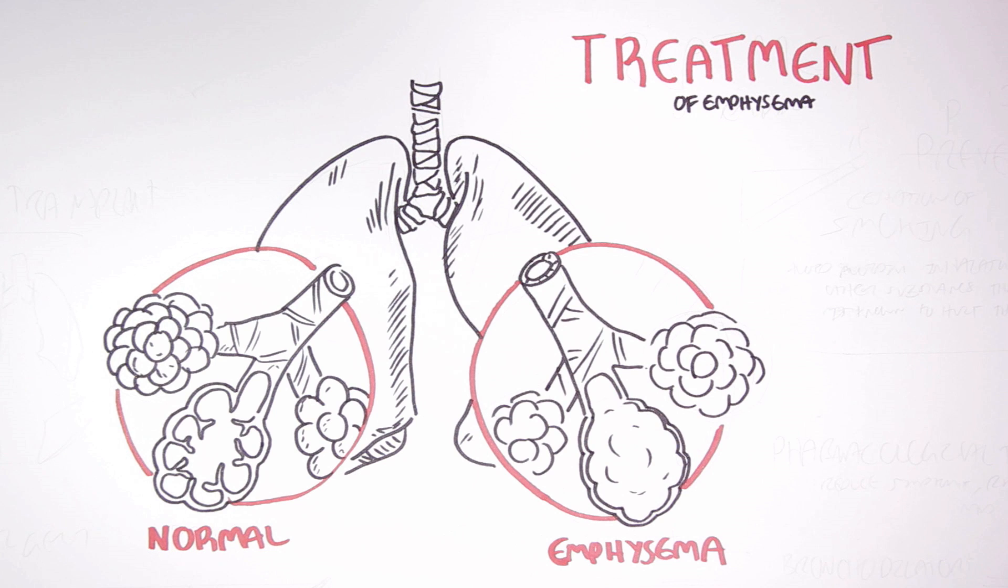Now emphysema is usually not a disease by itself. Many people with emphysema also have chronic bronchitis. A combination of the two lung diseases is commonly called chronic obstructive pulmonary disease, or COPD.